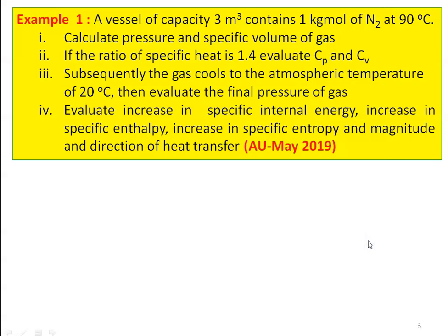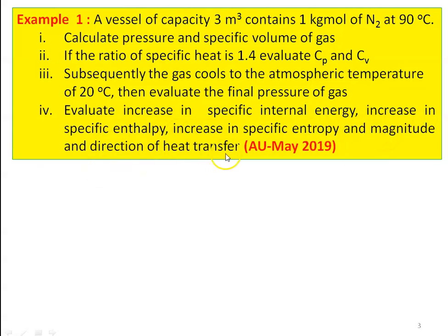We take example number 1 from the university question paper, May 2019. A vessel of capacity 3 meter cube contains 1 kilogram mole of nitrogen at 90 degree Celsius. One, calculate the pressure and specific volume of the gas. Two, if the ratio of specific heat gamma equals 1.4, evaluate Cp and Cv. Three, the gas cools to atmospheric temperature of 20 degree Celsius, then evaluate the final pressure of the gas. Four, evaluate increase in specific internal energy, specific enthalpy, specific entropy, and magnitude and direction of heat transfer.